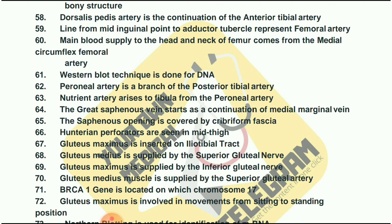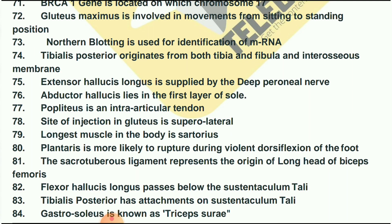Gluteus medius is supplied by the superior gluteal nerve. Gluteus maximus is supplied by the inferior gluteal nerve. BRCA1 gene is located on chromosome 17. Gluteus maximus is involved in movements from sitting to standing position. Northern blotting is used for identification of mRNA.